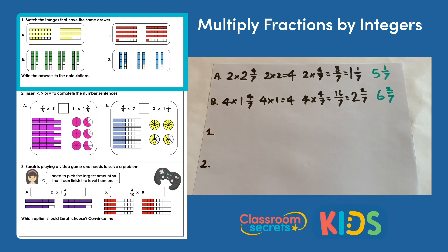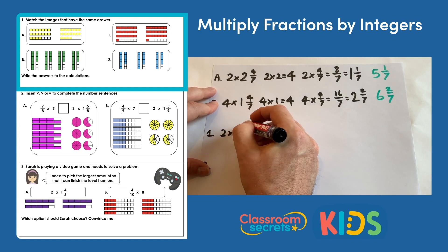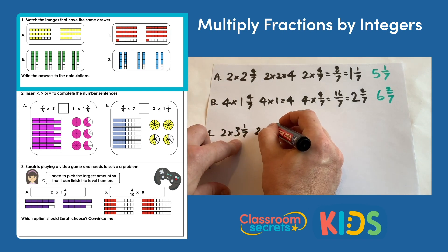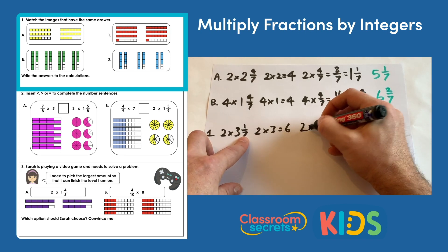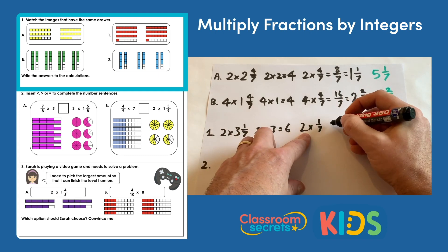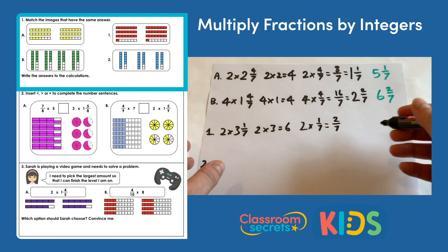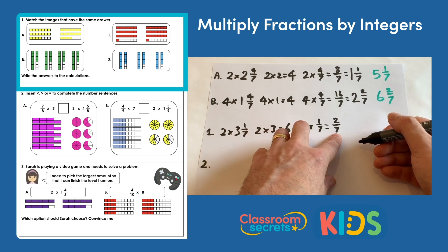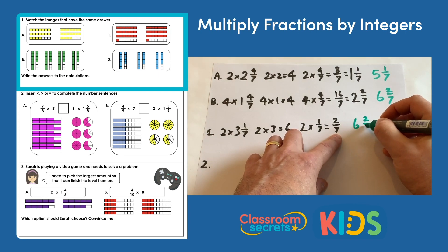If we look at image one, we have two lots of three and one seventh, so that'll be two multiplied by three and one seventh. Multiply the wholes first: two times three makes six. Then two lots of one seventh — multiply the integer by the numerator — makes two sevenths. Adding those together: six add two sevenths gives six and two sevenths.